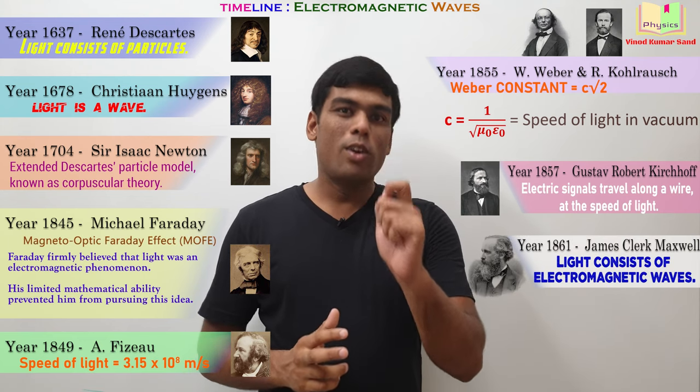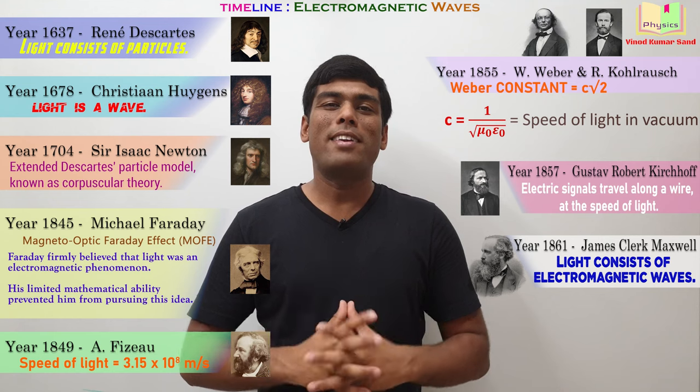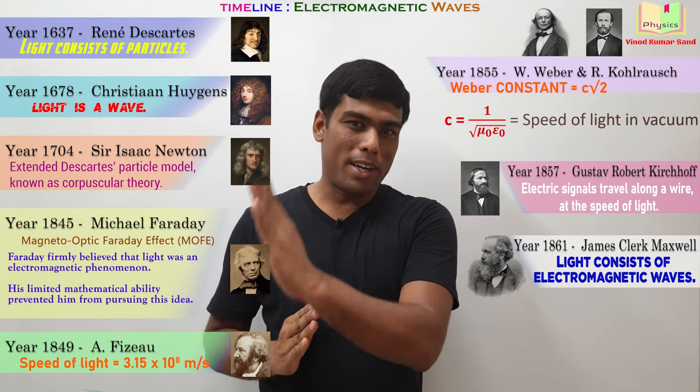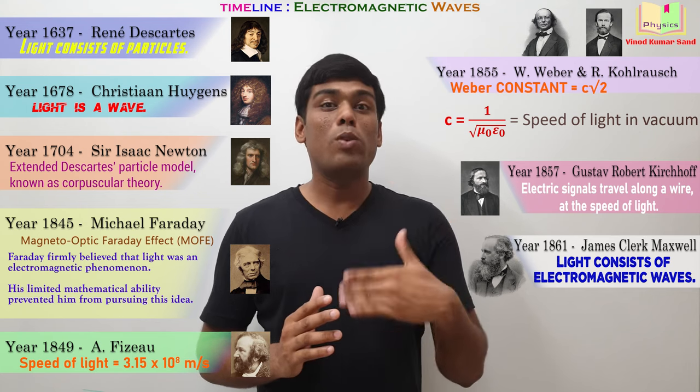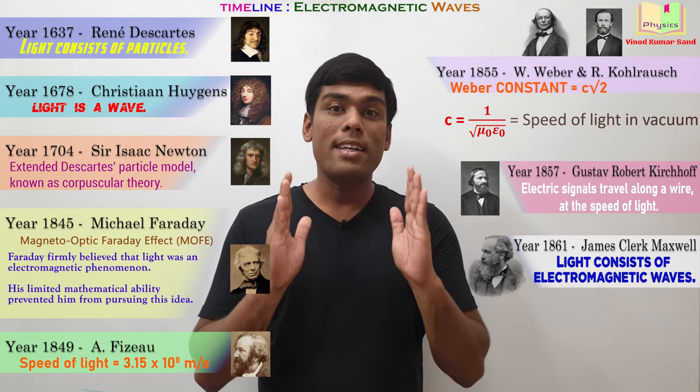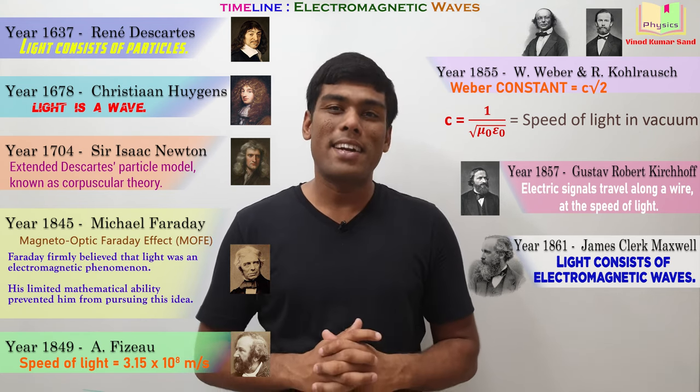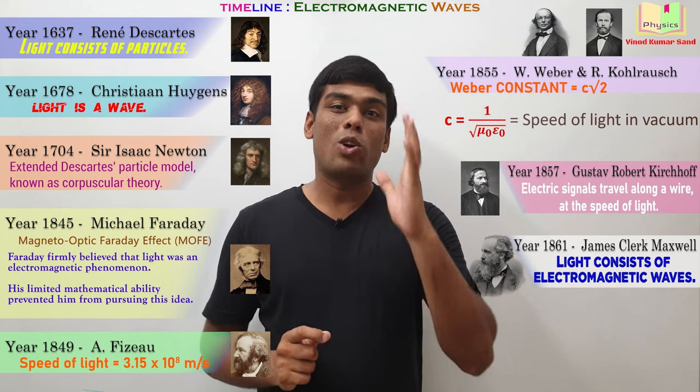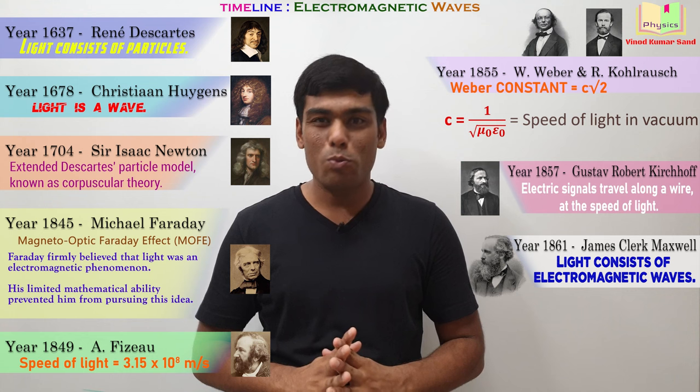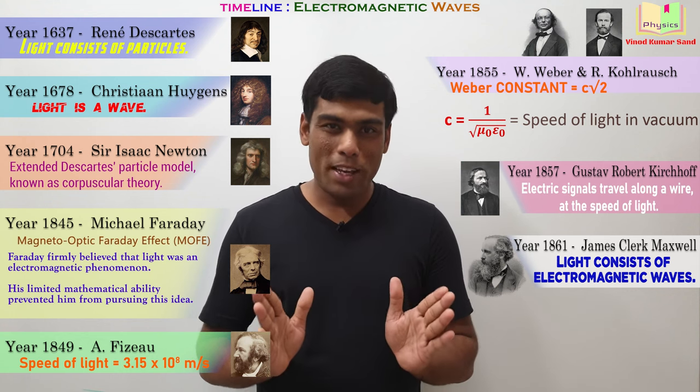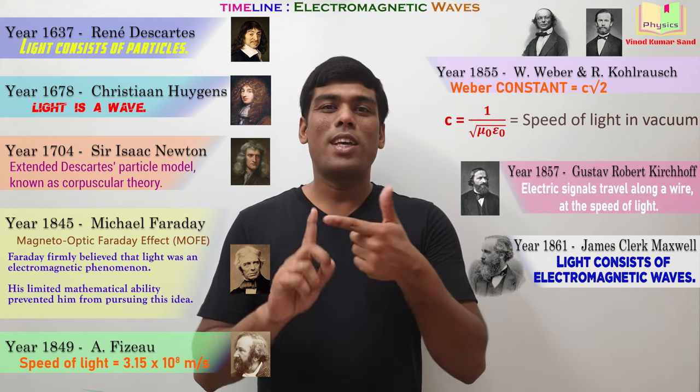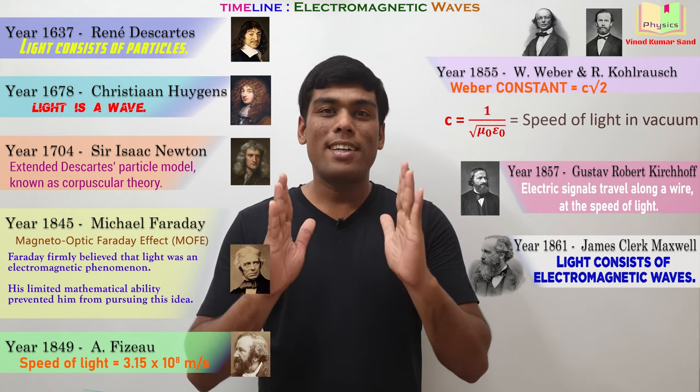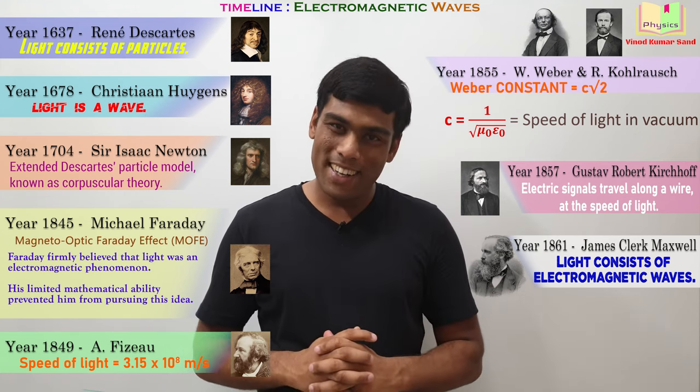Maxwell was a great admirer of Faraday. Maxwell had great mathematical abilities and Maxwell proved that light is an electromagnetic wave and light travels with the speed C is equal to 1 by root of mu naught epsilon naught in the vacuum. So, here comes the answer to the first question that light is an electromagnetic wave.